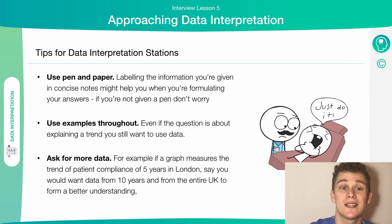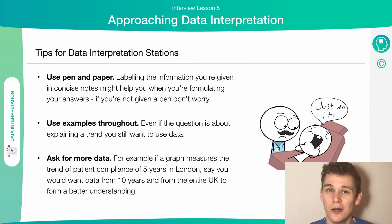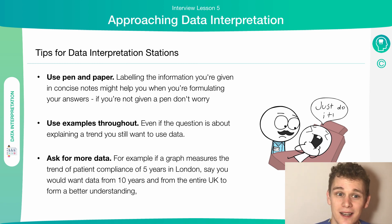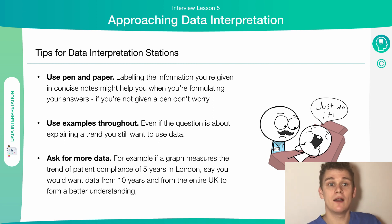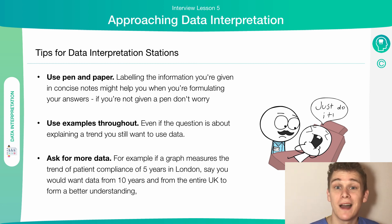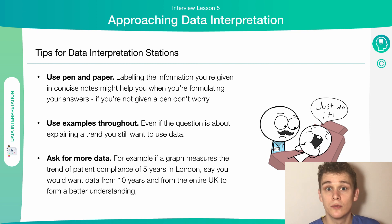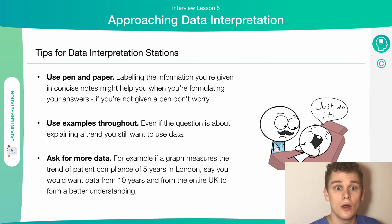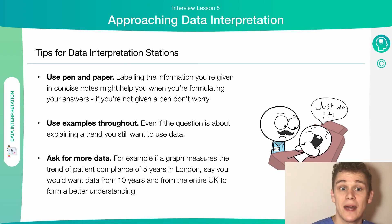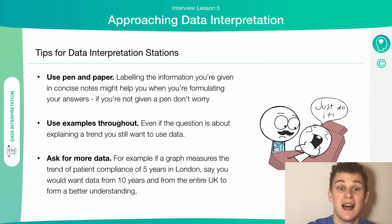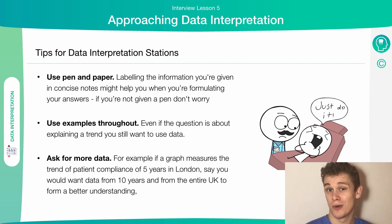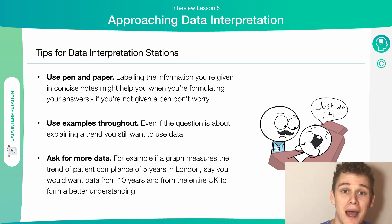Use examples throughout. Even if a question is about explaining a trend, you still want to use the data. And ask for more data if you want. For example, if a graph measures a trend of patient compliance over five years in London, say that to really give a better answer you'd want data from 10 years for the entire UK for a better understanding. The more data, the more information and the better answer. Look at Mark Zuckerberg — he's got all the data and with it comes all the knowledge, money and power.